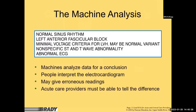Machine analysis — here's an actual example printout reading: normal sinus rhythm, left anterior fascicular block, minimal voltage criteria for left ventricular hypertrophy, maybe normal variant, nonspecific ST and T-wave abnormality, abnormal EKG. Does that tell you anything? It sounds very complicated — because the machine analyzes data and reaches a conclusion based entirely on a binary system: yes or no. It can't say 'I'm not sure' and move on. We can use that interpretive technique, but the machine cannot.